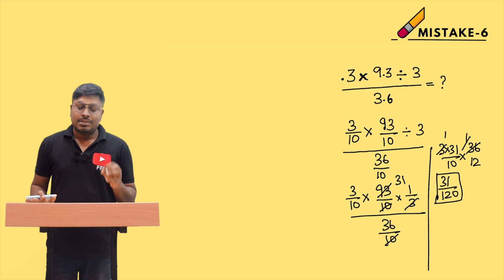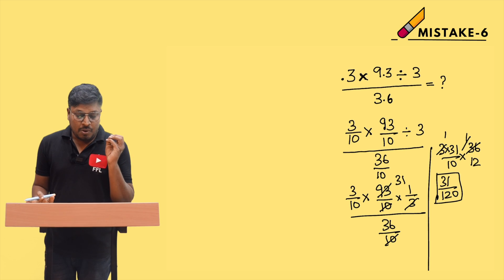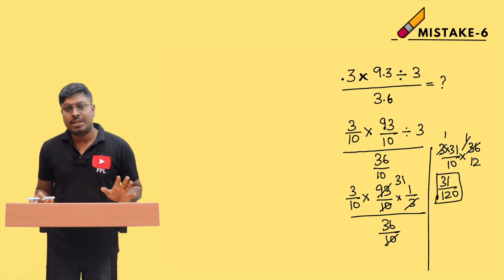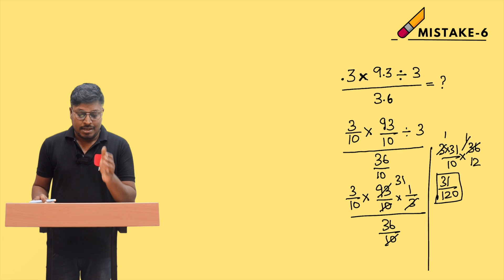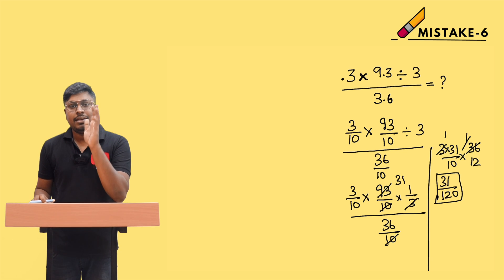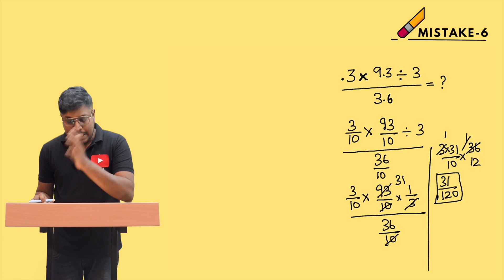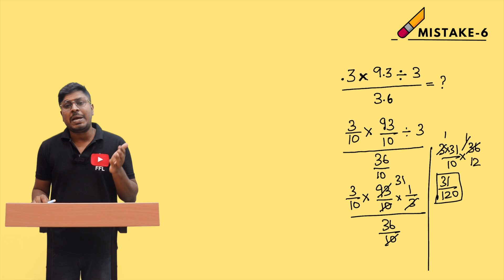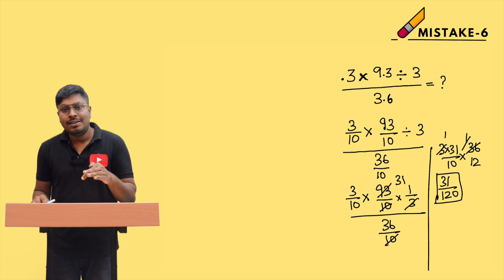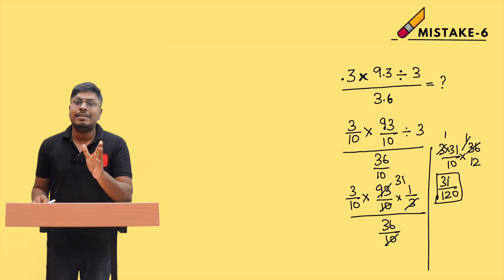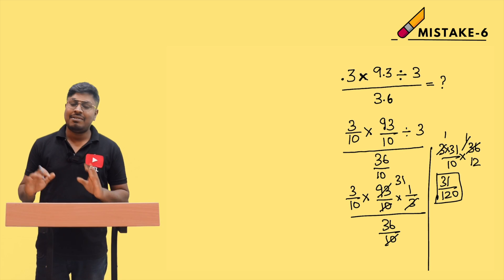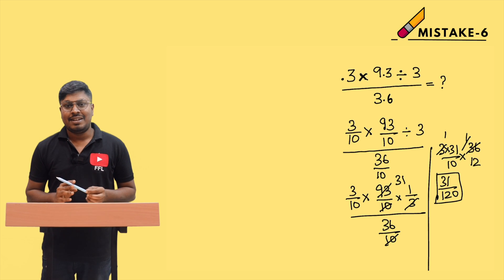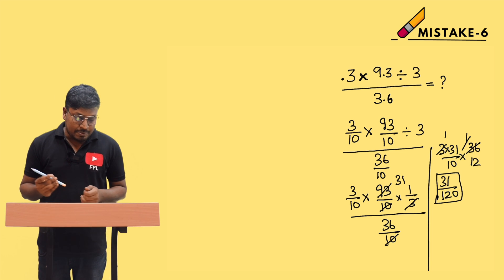To avoid decimal mistakes in exams: if it is 0.3, write it as 3/10; if it is 9.3, write as 93/10; if it is 9.33, write as 933/100. Then divide and multiply — you will surely get the right answer.